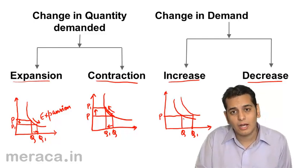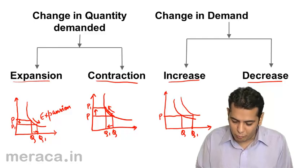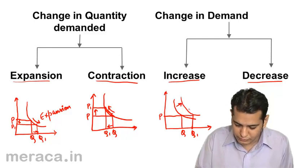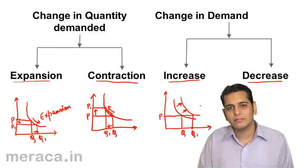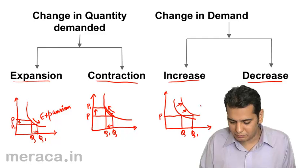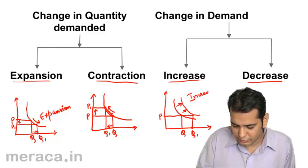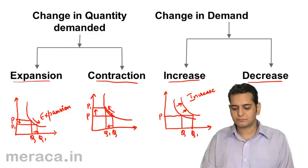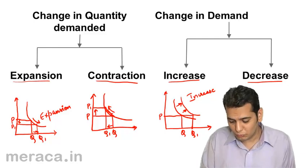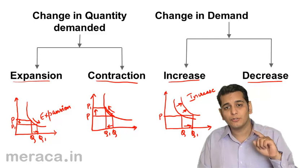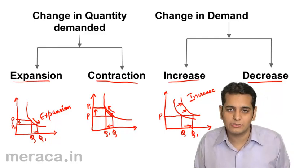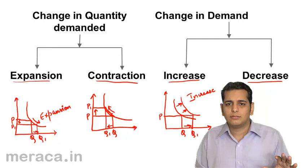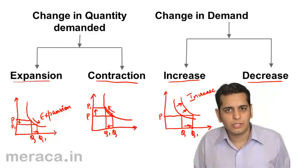Since price is constant, we cannot move along the existing curve. This forces an outward projection of the curve. When the curve shifts outward, or rightwards, we call it an increase in demand. The quantity demanded has changed because of some other factor — for instance, income level has increased or the price of substitutes has gone up.